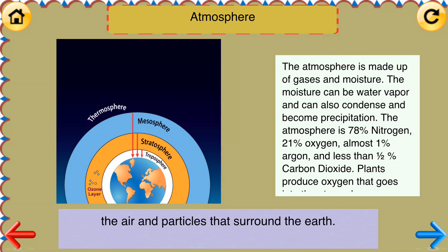Atmosphere: the air and particles that surround the earth. The atmosphere is made up of gases and moisture. The moisture can be water vapor and can also condense and become precipitation. The atmosphere is 78% nitrogen, 21% oxygen, almost 1% argon, and less than 1.5% carbon dioxide. Plants produce oxygen that goes into the atmosphere.